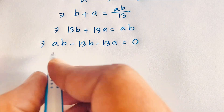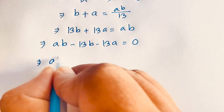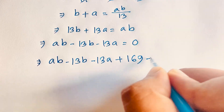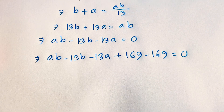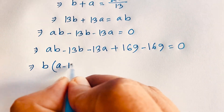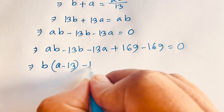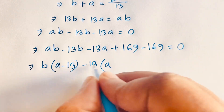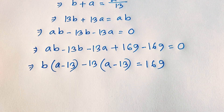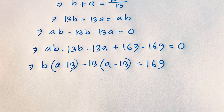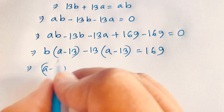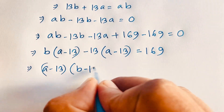Now I add 169 to both sides and subtract 169, so: ab minus 13b minus 13a plus 169 minus 169 equals 0. Here b is common, so it becomes b(a minus 13), and minus 13 is common in the remaining terms giving minus 13(a minus 13), equal to 169. So (a minus 13)(b minus 13) equals 169.